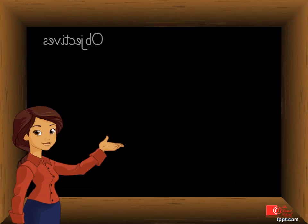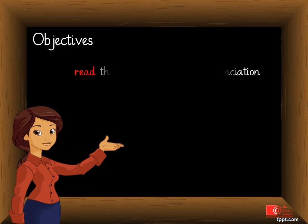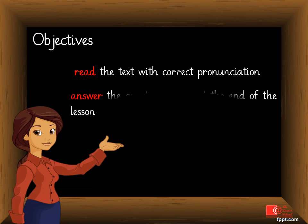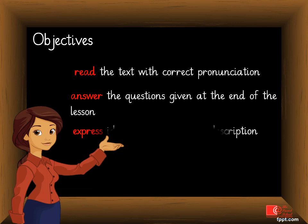Let's go through the objectives of the lesson. By the end of the lesson, I would like you to read the text with correct pronunciation. I would also want you to answer the questions given at the end of the lesson. And you should be able to express ideas through picture description.